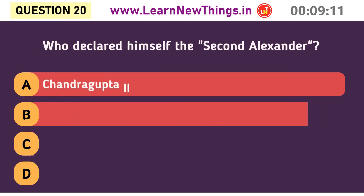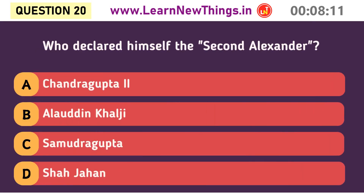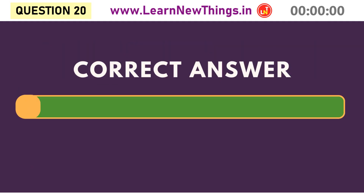Who declared himself the second Alexander? Alauddin Khalji.